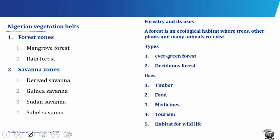Talking about Nigerian vegetation belts: Nigeria is a large country with varying vegetation belts found from north to south. These belts run from east to west of the country and are caused by rainfall, temperature, relative humidity, topography and human activities on the land.